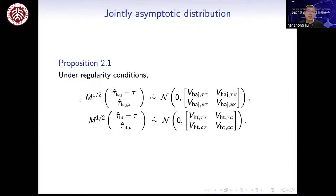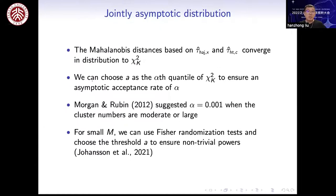Under mild moment conditions, we can show that the joint distribution of tau-hat-Hayek and tau-hat-Hayek-X is asymptotically normal with mean zero and variance V in a blockwise manner, with components V-Hayek-tau-tau, V-Hayek-tau-X, V-Hayek-X-tau, and V-Hayek-XX. Similarly we have the same results for the HT estimator. By this proposition, the Mahalanobis distance based on both tau-hat-Hayek and tau-hat-HT converges in distribution to a chi-square distribution with k degrees of freedom. This provides guidance for choosing threshold A. For example, we can choose A as the alpha quantile of the chi-square distribution to ensure an asymptotic acceptance rate of alpha. As suggested by Morgan and Rubin in 2012, we can take alpha equals 0.001 when the cluster numbers are moderate or large.